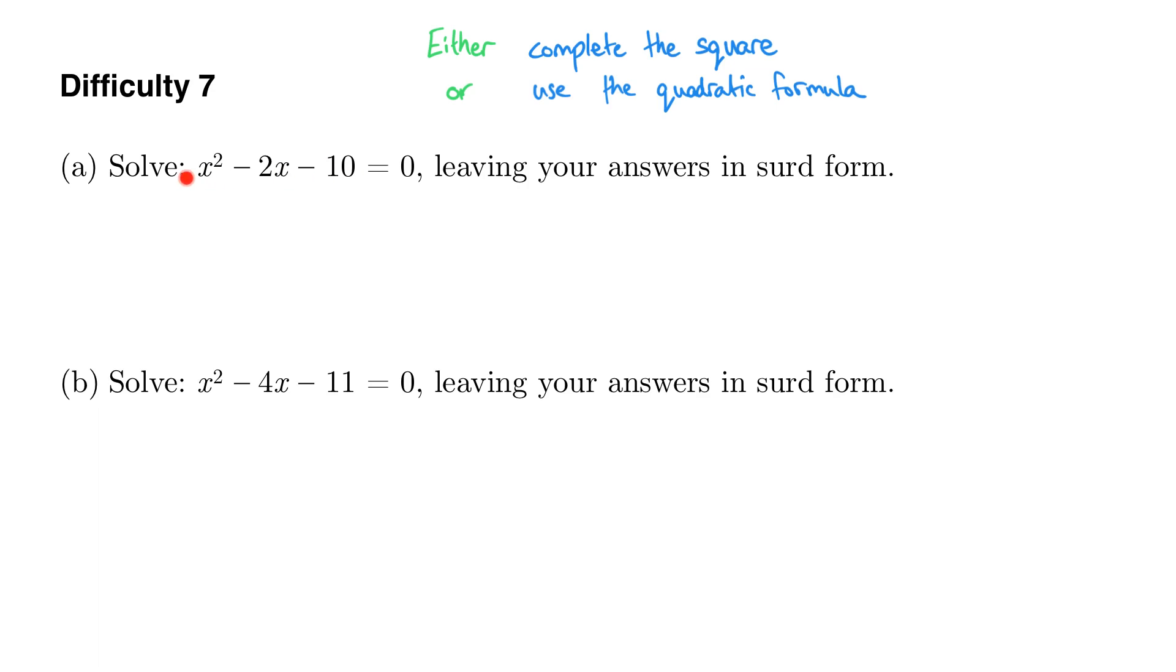So let's look at completing the square for this expression. Now in general, if you've got an expression of the form x minus something squared, so for example let's say I had x minus 5 squared, when we expand that we would get x squared minus 10x plus 25. What we're trying to do is write this in the form x plus or minus something squared with some extra bit to adjust later on.